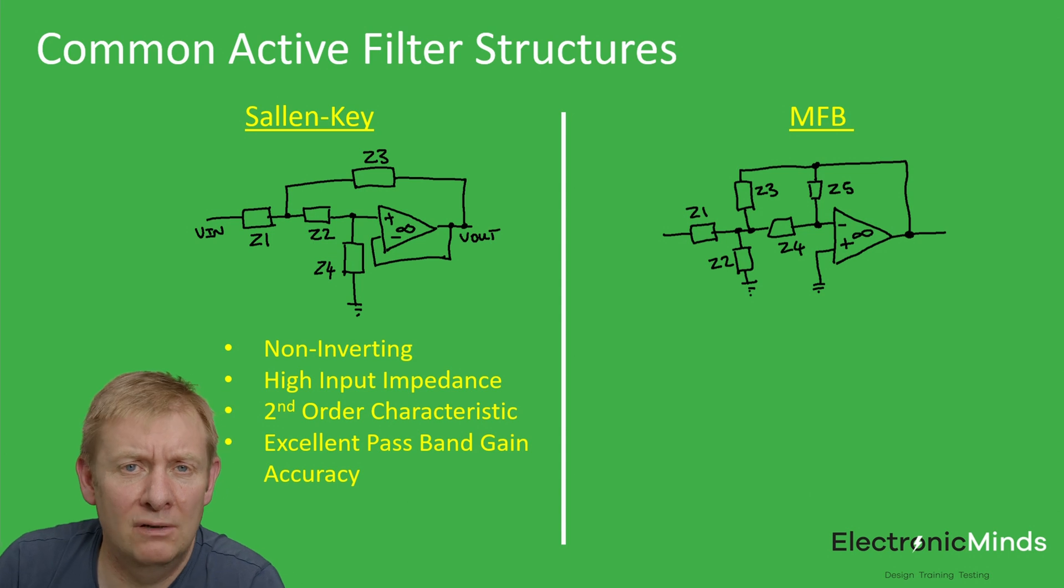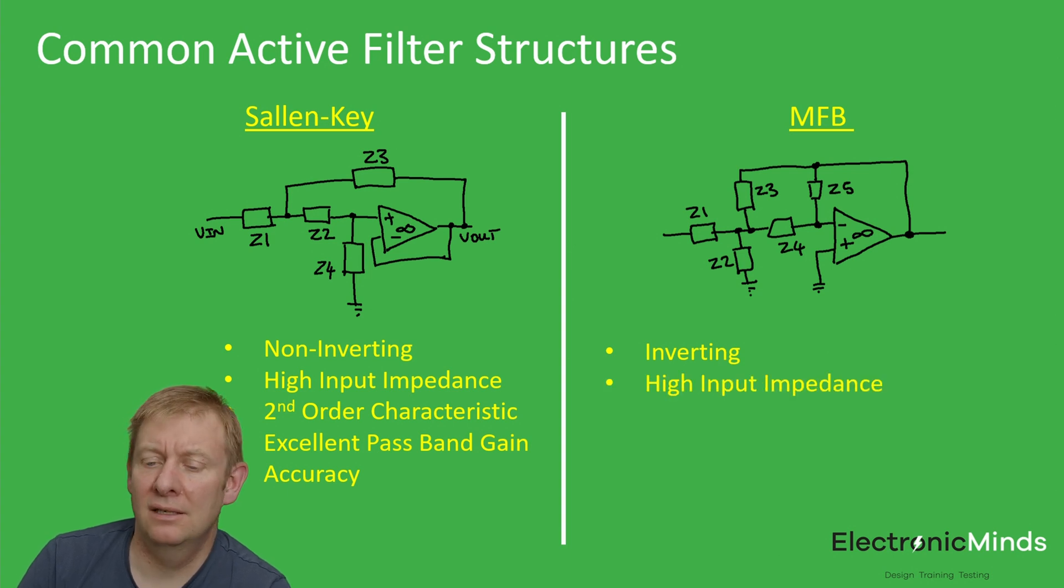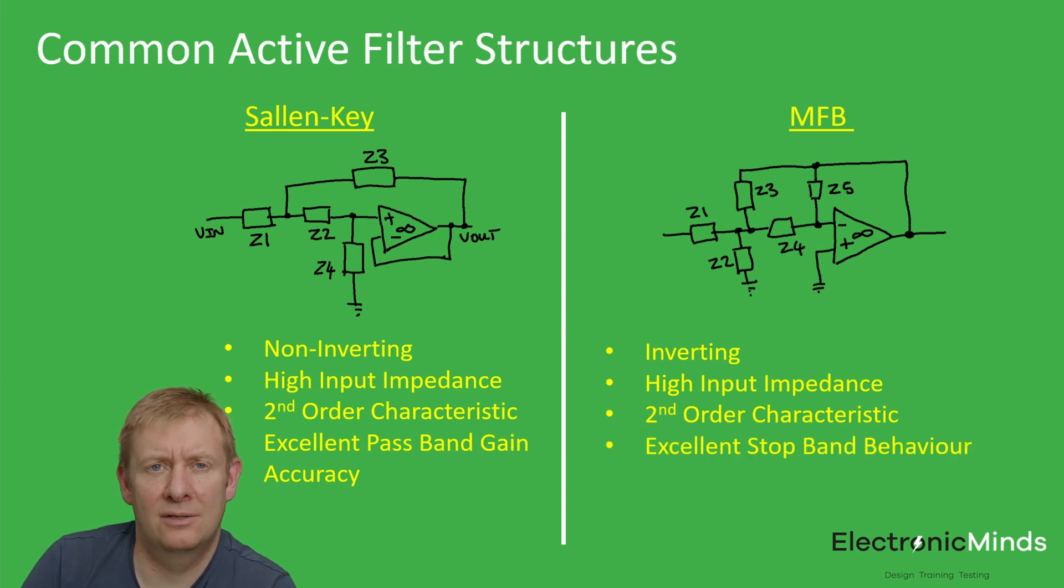We have the multiple feedback filter. This looks similar but actually has five passive components. It provides an inverting characteristic, high input impedance, and a second-order characteristic. The great thing about the MFB filter is it provides excellent stopband behavior, much better than the Sallen-Key network.